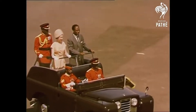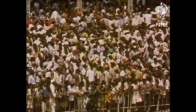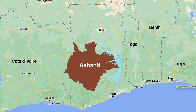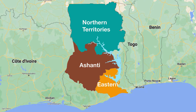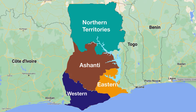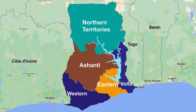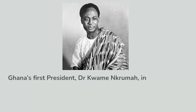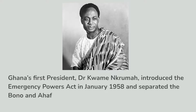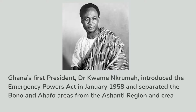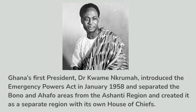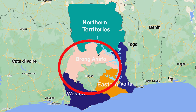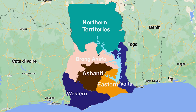At independence, Ghana started with five regions on 6th March 1957: Ashanti, the Northern, Eastern, Western, and the Volta regions. The first region to be created post-independence was the Brong Ahafo region. Ghana's first president, Dr. Kwame Nkrumah, introduced the Emergency Power Act in January 1958 and separated the Brong and Ahafo areas from the Ashanti region, creating it as a separate region.